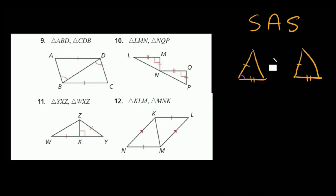One thing I want to make clear: let's say we moved the angle up here instead. Could we say that these two triangles are congruent using side angle side? In this case we can't, because this angle is not in between the two sides. This side and this side both meet right here, so that's why the angle should be here — and it's also in the name: side angle side.